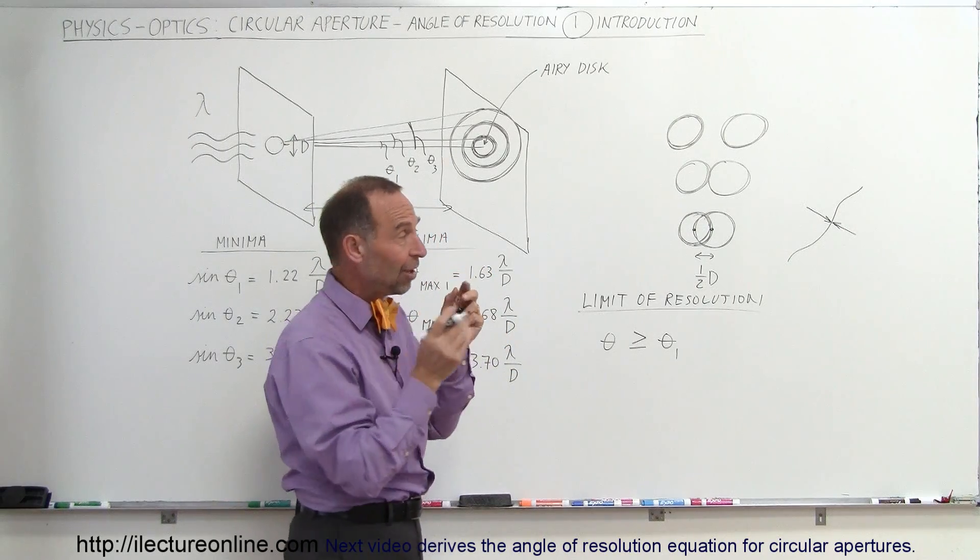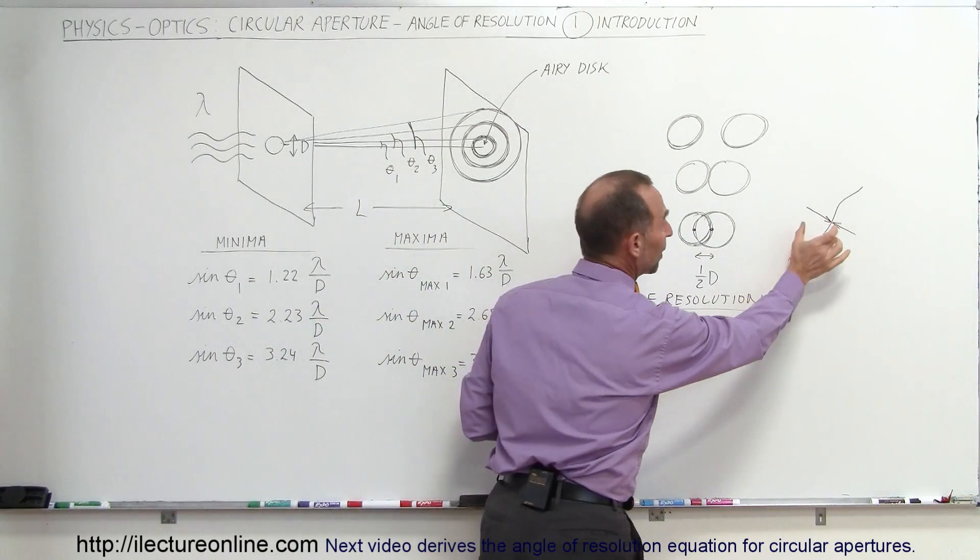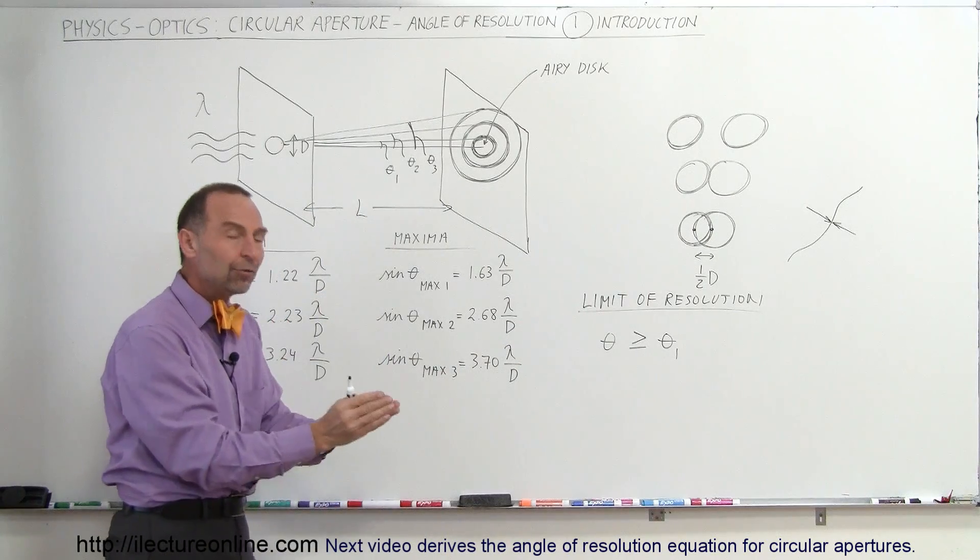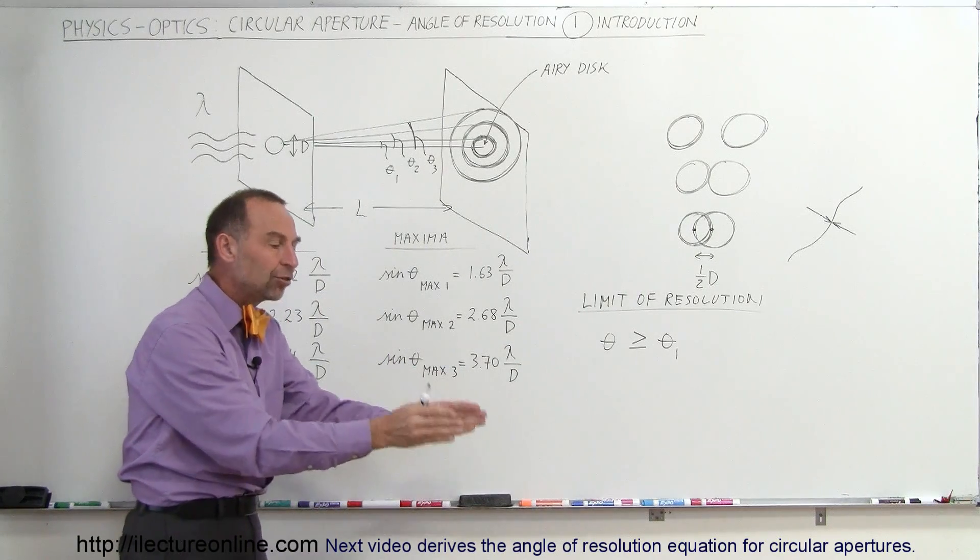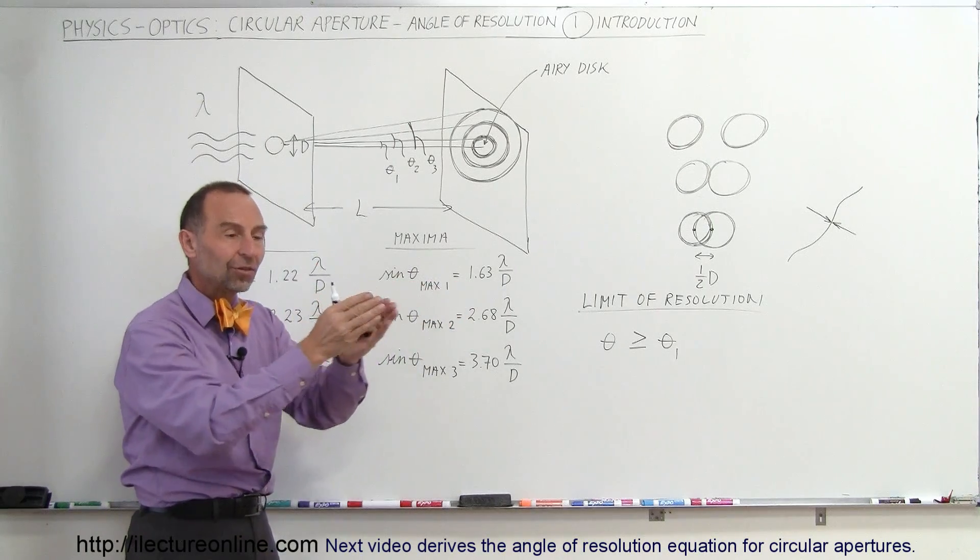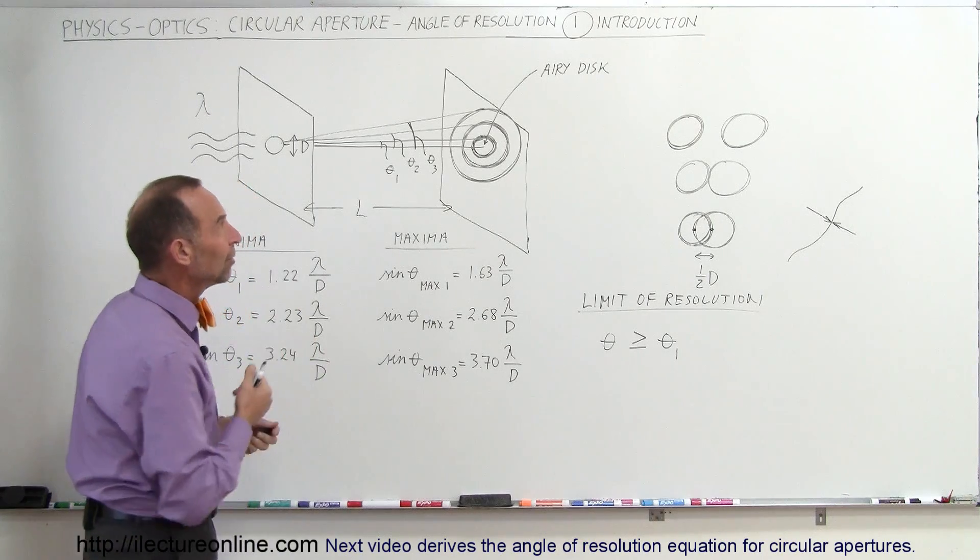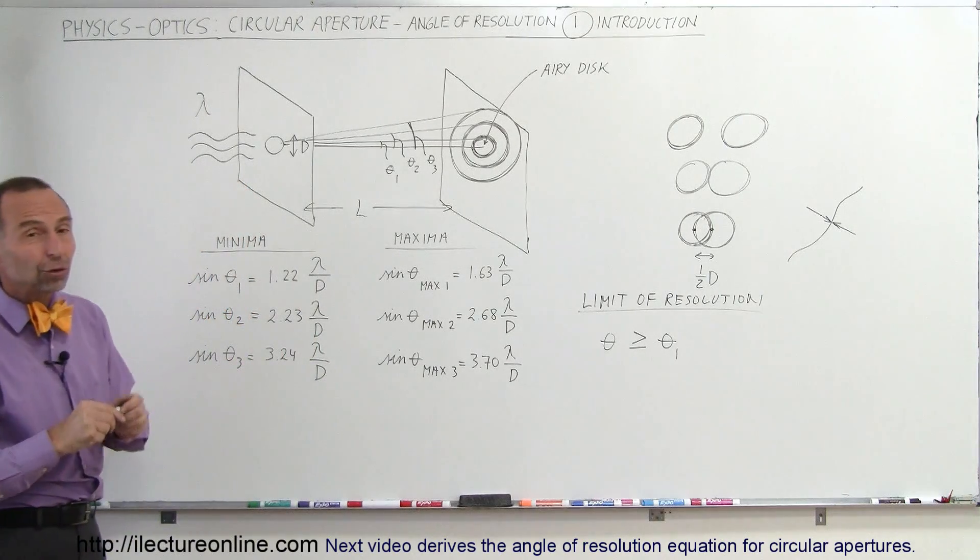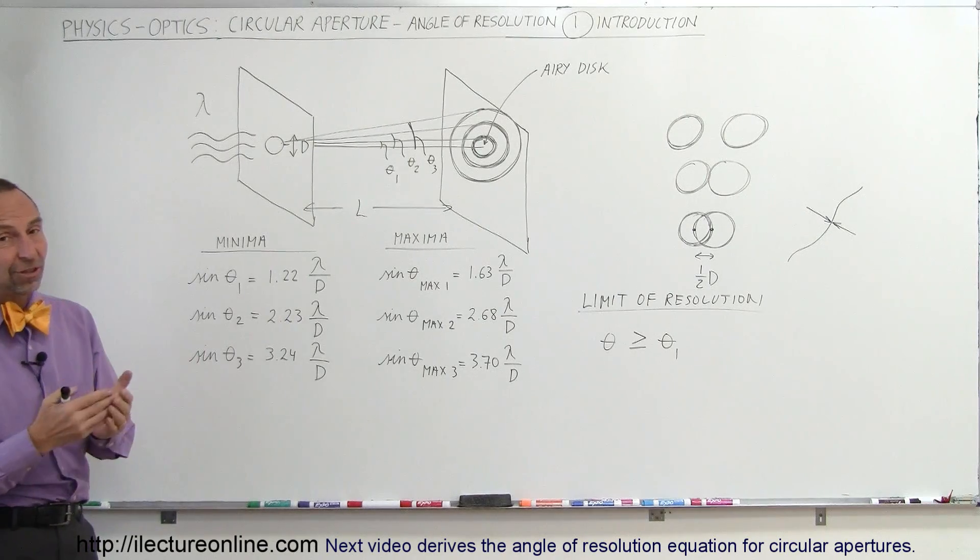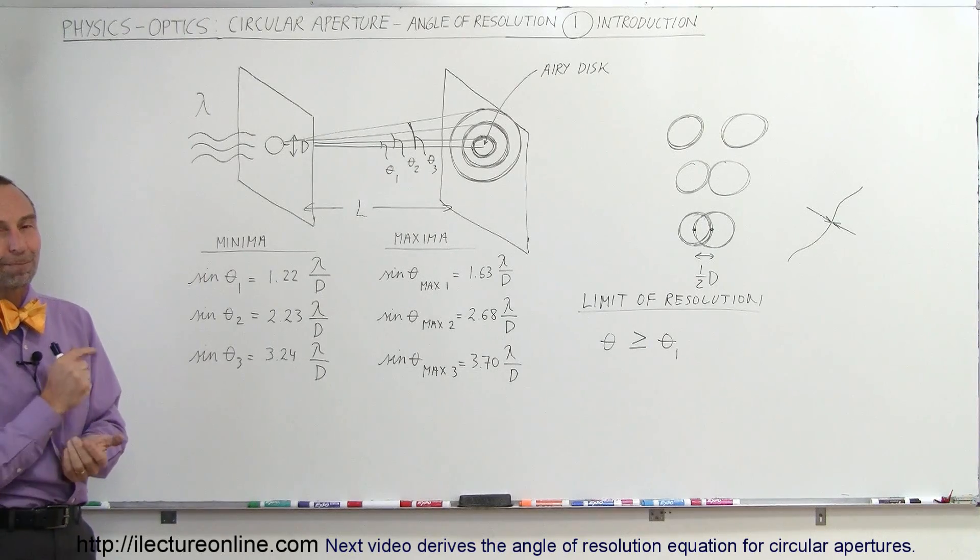If we don't have bad vision, maybe we need glasses. But as long as the conditions are correct, we're going to be able to resolve or be able to distinguish or see items as long as that angle of resolution is smaller than the angle subtended by the object we're looking at or the angle subtended by two objects, the separation of two objects. And that's the whole idea behind the resolution of objects due to the diffraction patterns of circular apertures. So there's the introduction. If you're still interested, we have several more videos that show you how to actually do all this. Stay tuned.